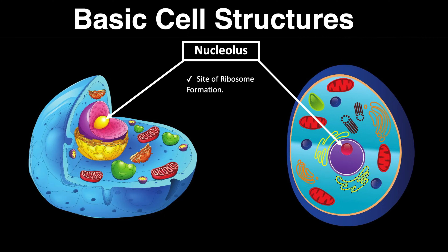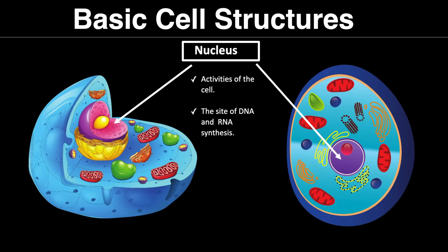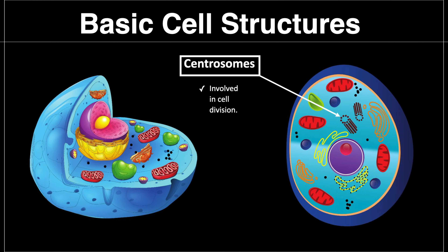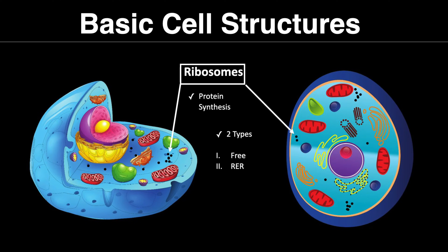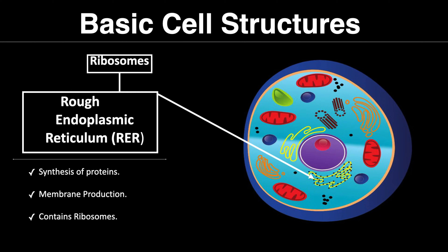Now let's talk about organelles. The nucleolus is the site of ribosome formation. The nucleus monitors all activities of the cell and is the site of DNA and RNA synthesis. Centrioles are involved in cell division. Mitochondria, or mitochondrion, is the powerhouse of the cell — think of a charger to your phone. Ribosomes are where protein is made. There are two types: free ribosomes and rough ER. Rough endoplasmic reticulum is the site of protein synthesis and also contributes to membrane production — it contains ribosomes, hence the name rough ER.